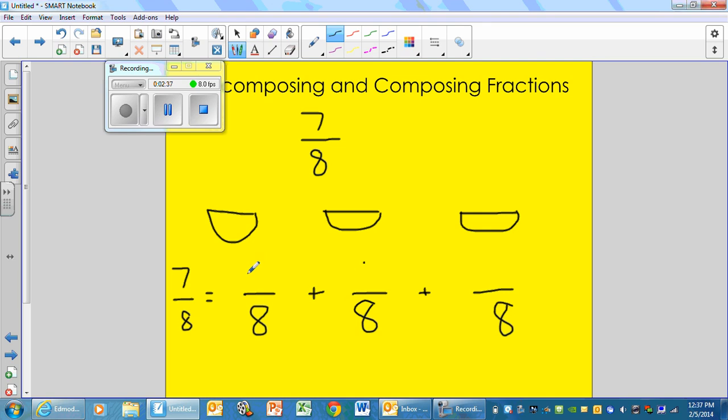Let's say we have 2 eighths here. And then let's say we do 2 again. And the last one would then have to be what? 3. Right. Because we know the denominator stays the same and 2 plus 2 plus 3 equals 7. That is easy as a piece of cake. Now we're going to be talking about other ways you can do it. Think of another way you could have split it up into 3 fractions and write it down.